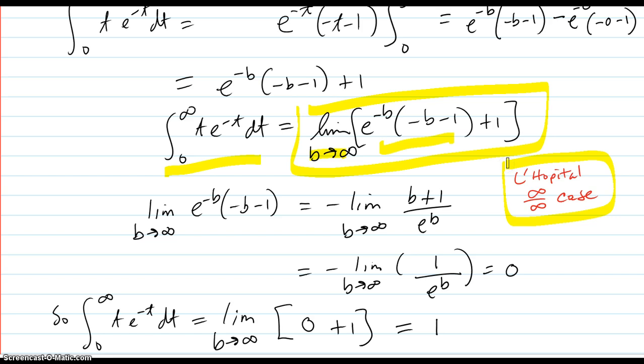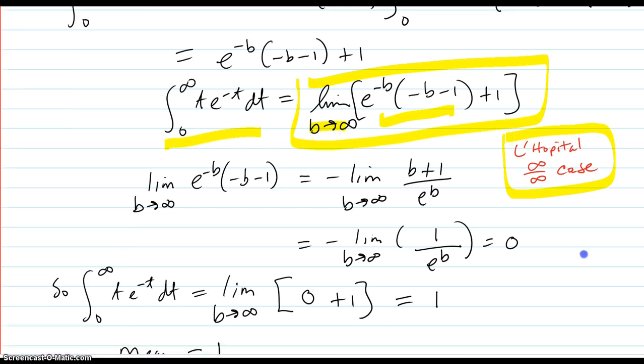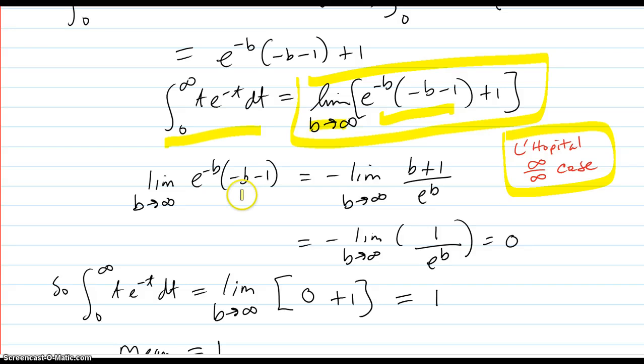So we better go to L'Hôpital's rule and maneuver this into an infinity over infinity case. I factored out a negative 1, brought it out to the outside limit. I wrote e^(-b) as e^b in the denominator.